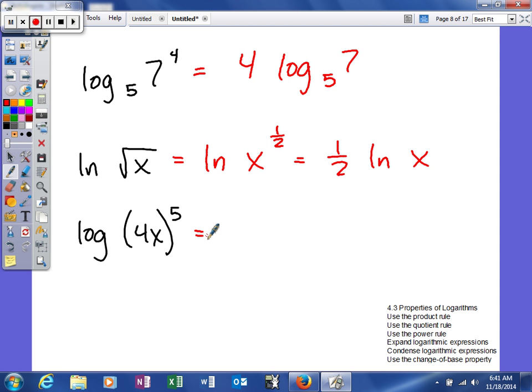Now in the last example, all we're going to do is take our exponent and rewrite it as a coefficient. So we have 5 log of 4x. When we get into condensing, we'll have to break this up into two logarithms, but we're not there yet, so that's it.